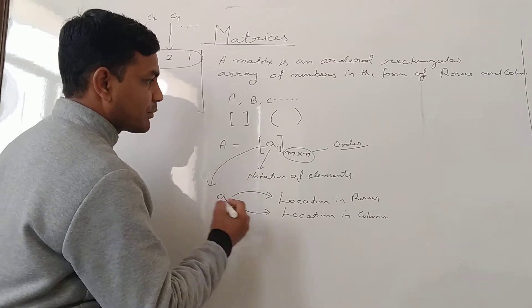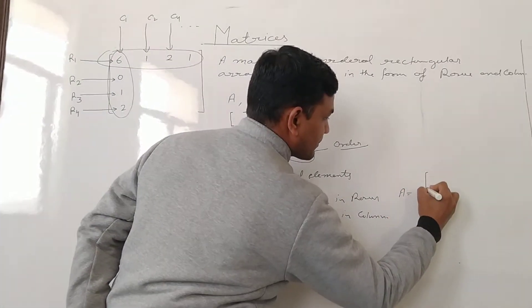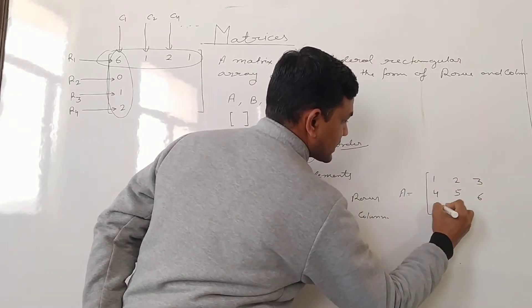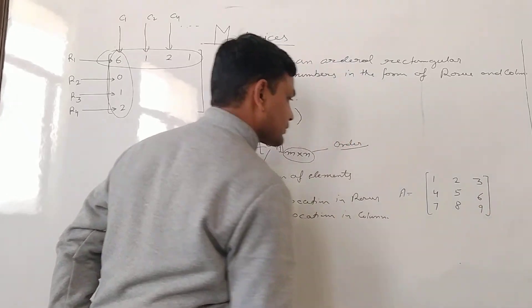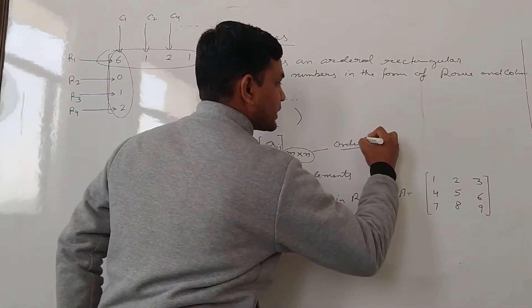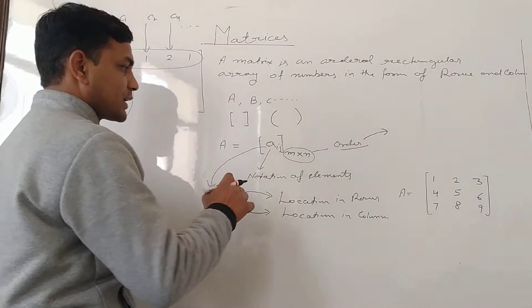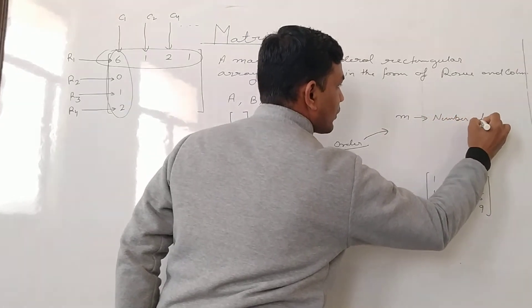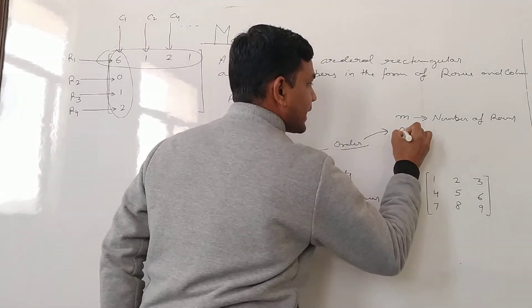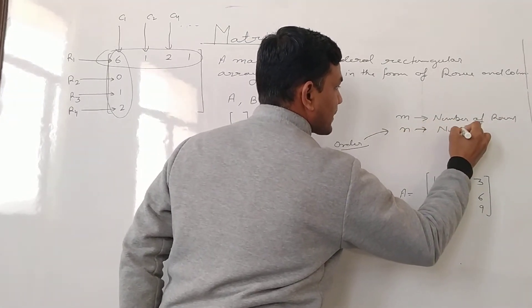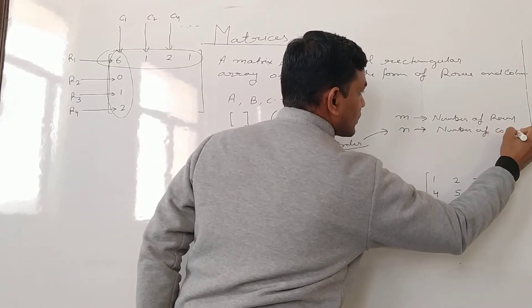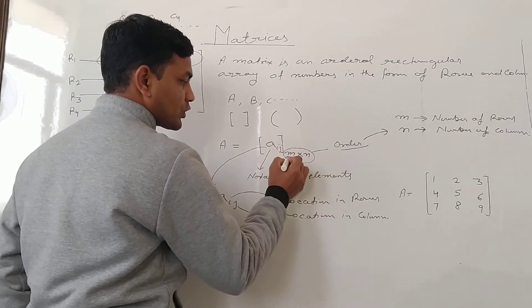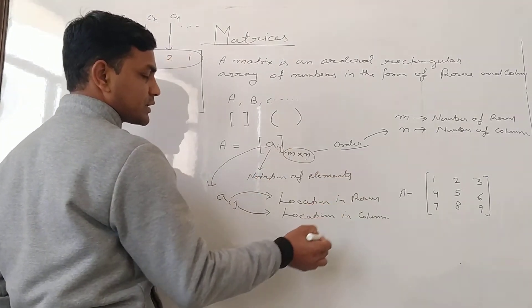Suppose we have matrix A equal to 1, 2, 3, 4, 5, 6, 7, 8, and 9. The order of the matrix represents the number of rows and columns, where M equals the number of rows and N represents the number of columns. The representation is M cross N — M always represents rows and N always represents columns.